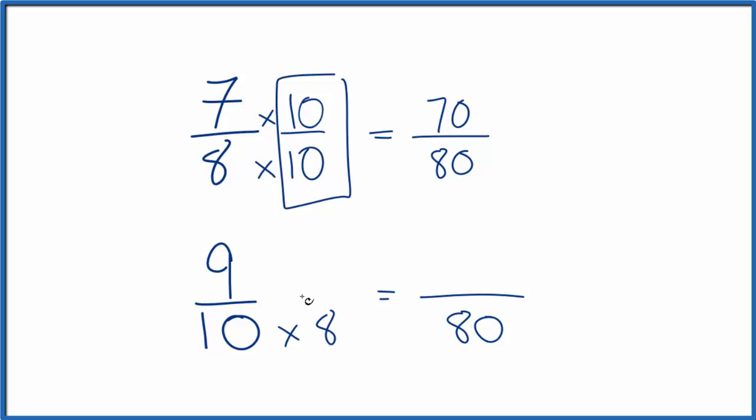Down here, I need to multiply by 8 over 8. So 9 times 8 is 72, and then I have 80 down here.